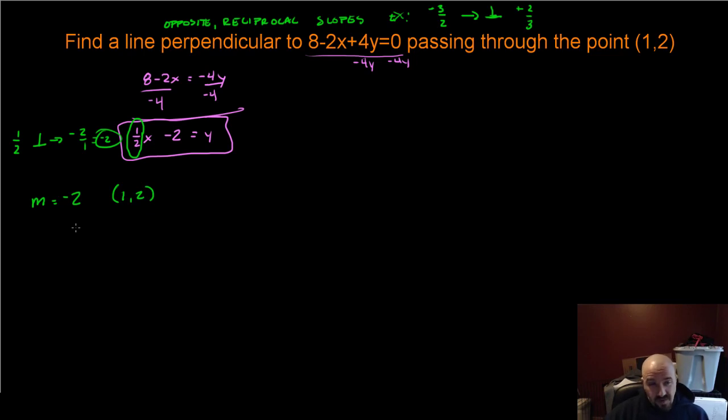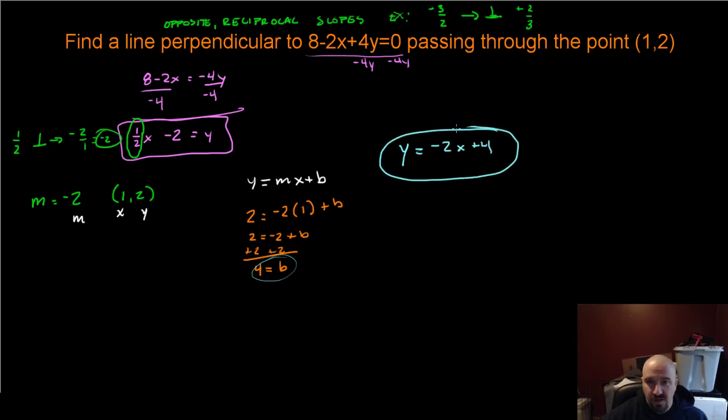Again, if you want to put it in point-slope form, that's fine. If you're required to put it in the slope-intercept form, then we can just do that from here. y = mx + b. This is x, this is y, this is m. We just plug all that information in. That gives us 2 = -2(1) + b. That gives us 2 = -2 + b. If I add 2 to both sides, I get 4 = b. Finally, then, because I have a slope of -2 and a b value of 4, y = -2x + 4. That will be perpendicular to 8 - 2x + 4y = 0 and it will pass through the point (1, 2).